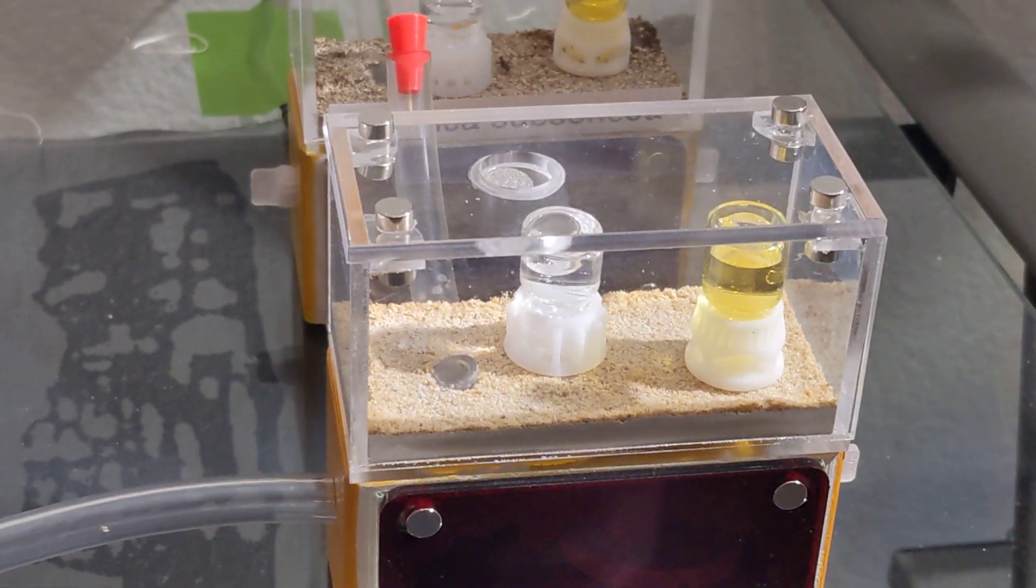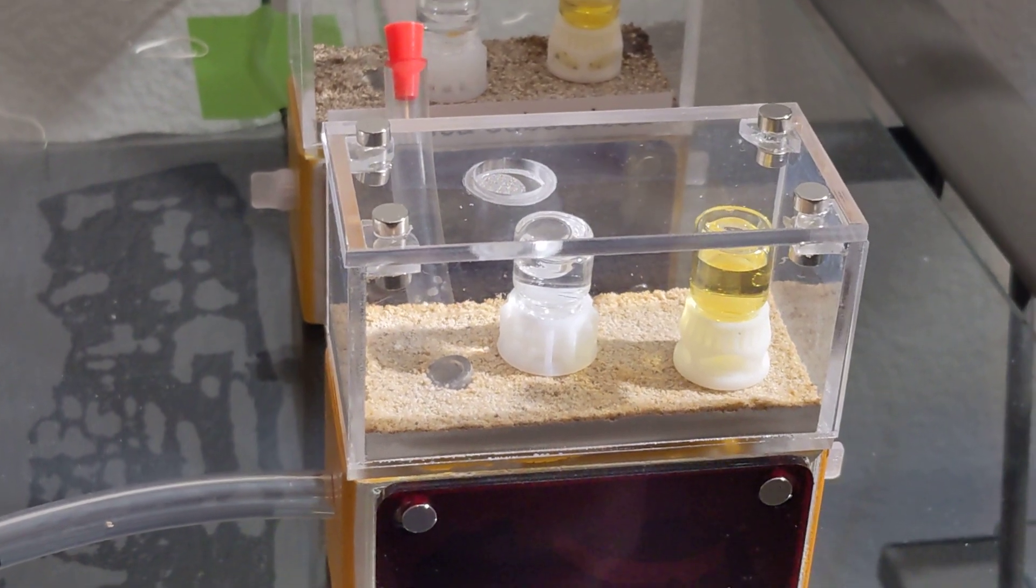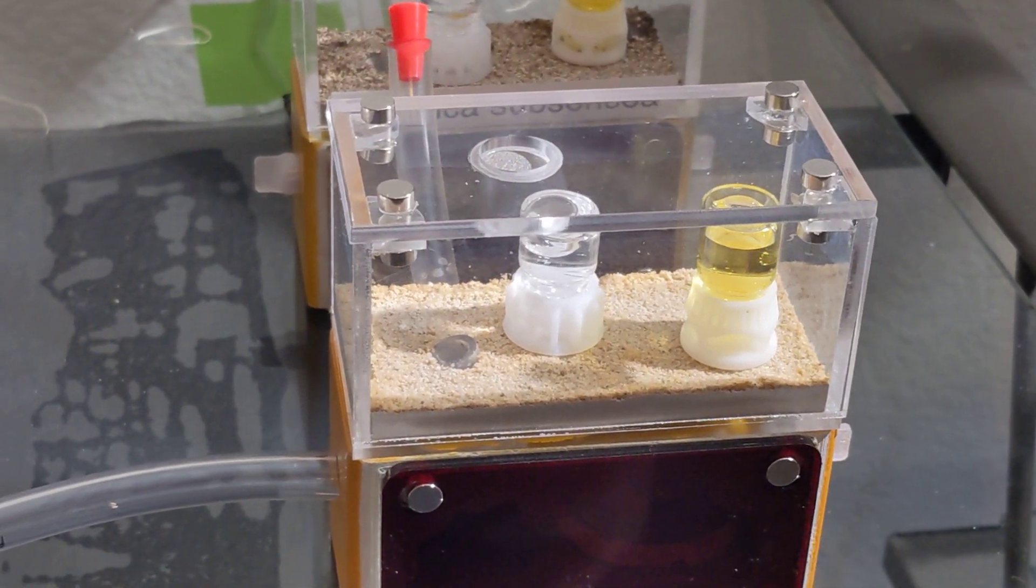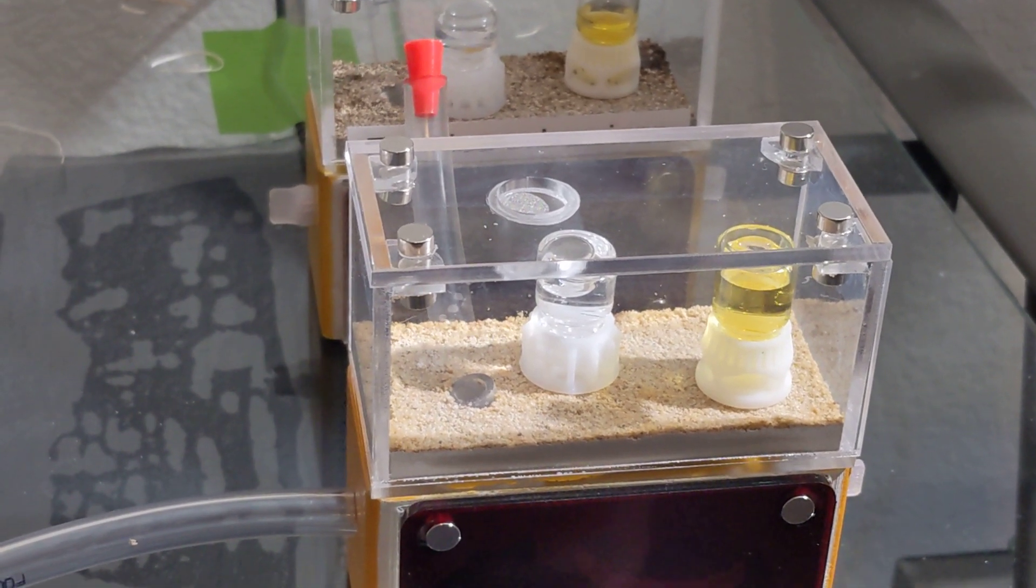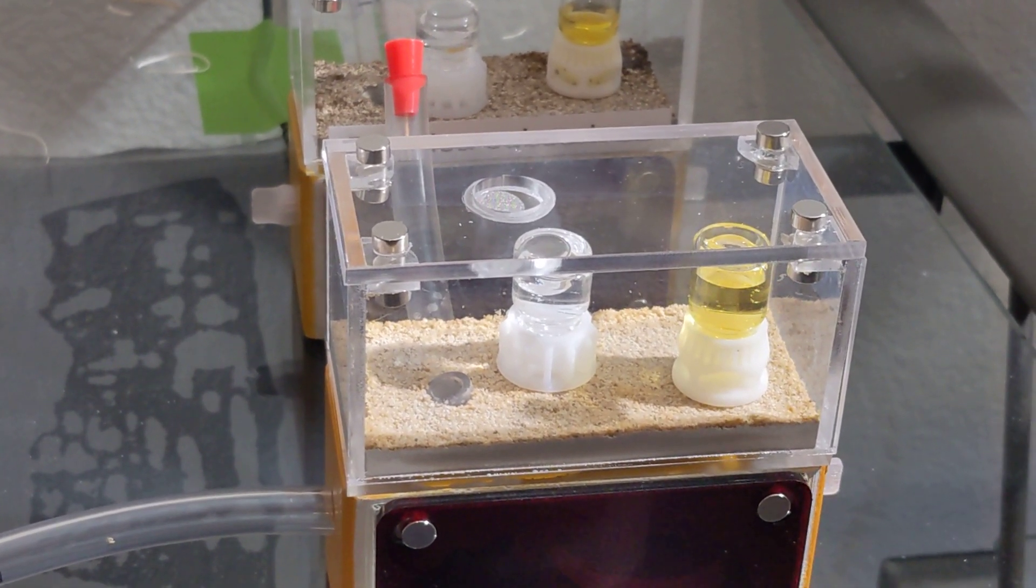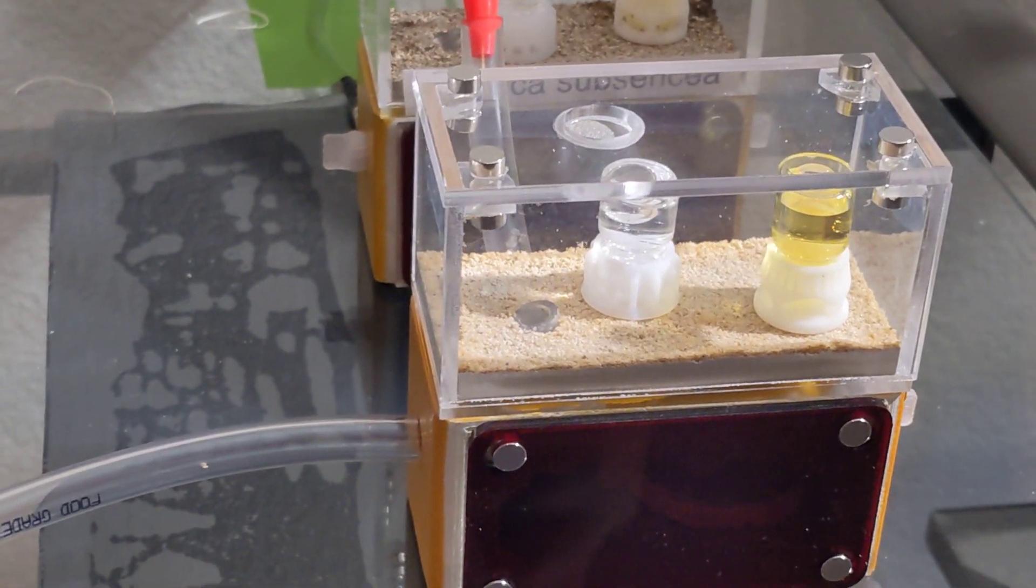Because both this Formica and this Camponotus species I have here - pogo species like it in the low to maybe even up to the mid-90s degrees Fahrenheit. And for these guys, that's pretty hot. So I don't want to do that.